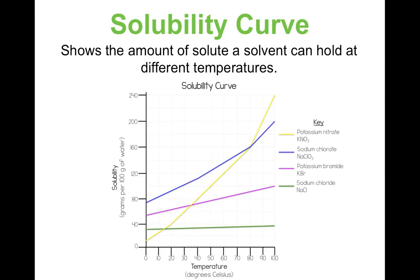One question we could ask: at what temperature do potassium nitrate and potassium bromide have the same solubility? Potassium nitrate is the yellow line and potassium bromide is the pink line. When do they have the same solubility? That's where they criss-cross — and notice they both have a solubility of about 70 grams at a temperature of 35 degrees Celsius.